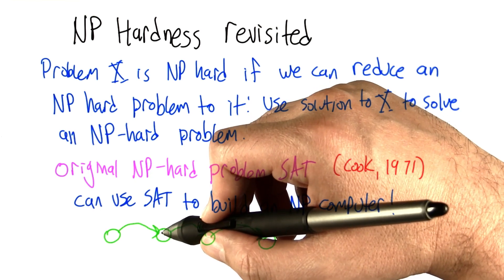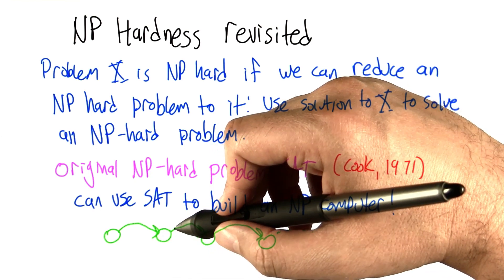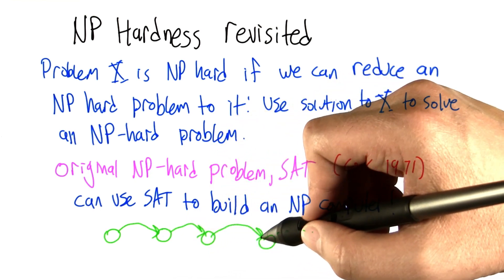Well, we can just show that there's some other NP-hard problem that we could reduce to it, and so on, and so on, and so on.